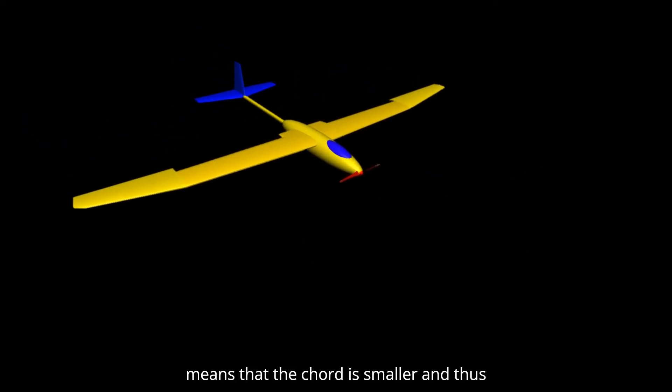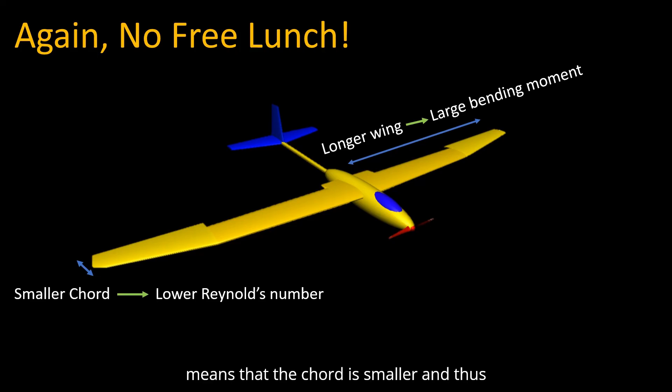Higher aspect ratio also means that the cord is smaller, and thus Reynolds number is lower. Very low Reynolds numbers mean more drag and lesser lift produced by the airfoil. Having a long wing is structurally inefficient, and there are large bending moments. When using long and narrow wings, it must be ensured that the wing is stiff in torsion, to balance the pitching moment, and to avoid aileron reversal.